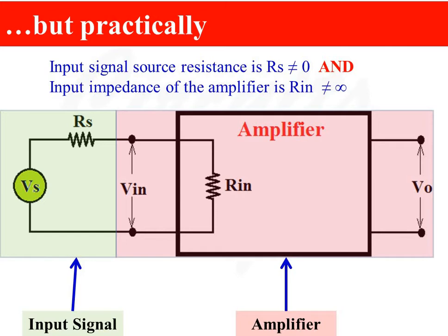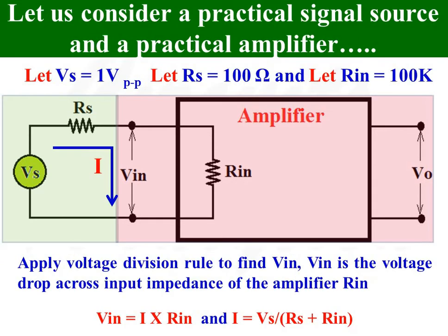A very small amount of voltage is dropped across the source resistance RS, and the remaining voltage will be available across the input terminals of the amplifier RIN. Let us consider a practical example: input signal VS is equal to 1V peak to peak, source resistance RS is equal to 100 ohms, and input resistance RIN is equal to 100K ohms. Apply the voltage division rule to find the effective value of input voltage VIN, which is the voltage drop across RIN.